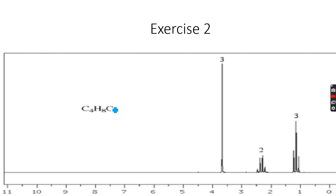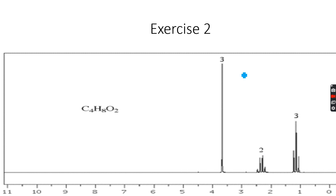Now for the next spectrum, they've given the molecular formula C4H8O2, so I know I have four carbon atoms, eight hydrogen atoms, and two oxygen atoms. The eight hydrogen atoms are confirmed because integration numbers are given on top of the peaks. Three plus two plus three equals eight, which matches.